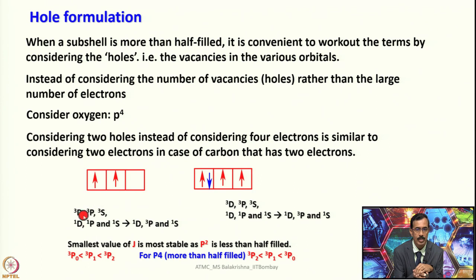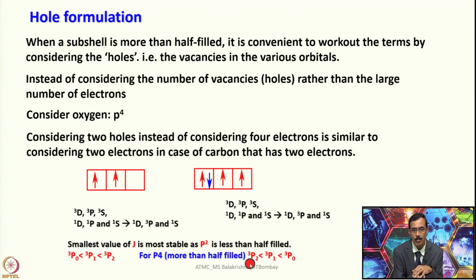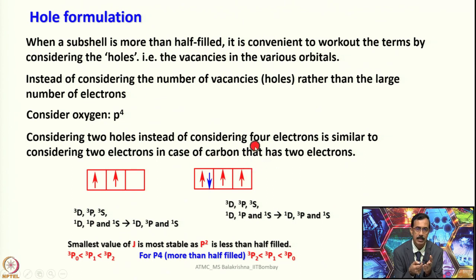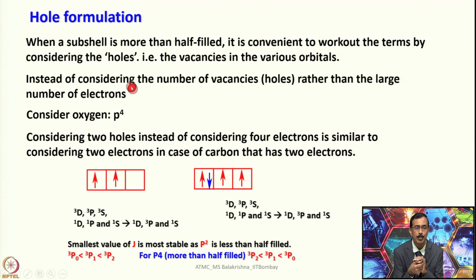In carbon (P2) the ground state is ³P, and the same terms apply to oxygen (P4) via the 2-hole analogy. However, the ordering of J levels is reversed: for P2 (less than half-filled), the smallest J is most stable (³P₀ is ground), while for P4 (more than half-filled), the highest J is most stable, so ³P₂ becomes the ground term. The order is just reversed. This hole formulation simplifies comparison across configurations including D series.